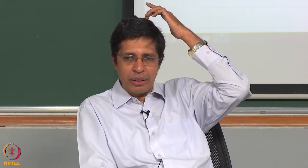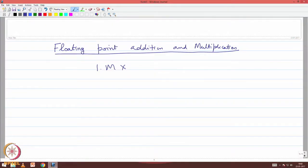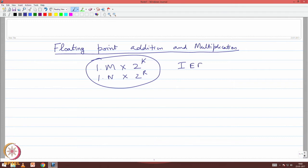What is the time required for performing floating point addition and floating point multiplication? If we have numbers like 1.m × 2^k and 1.n × 2^r represented in IEEE 754 format, what does it mean to add and what does it mean to multiply these?